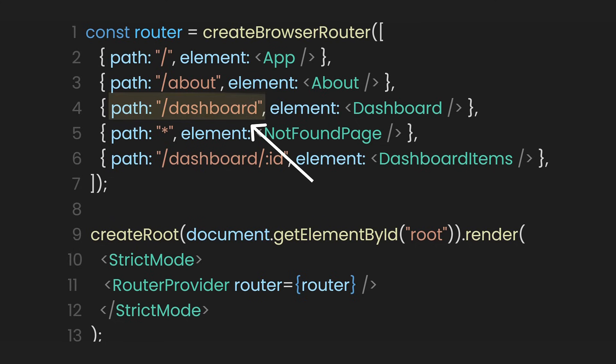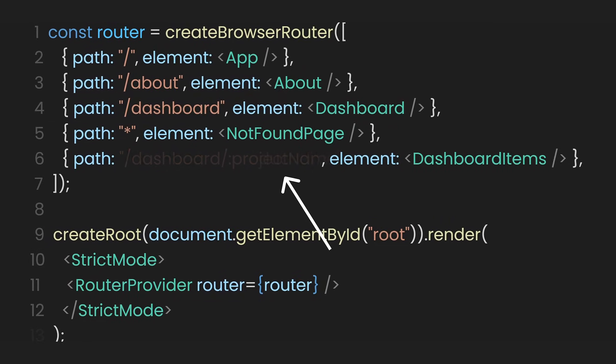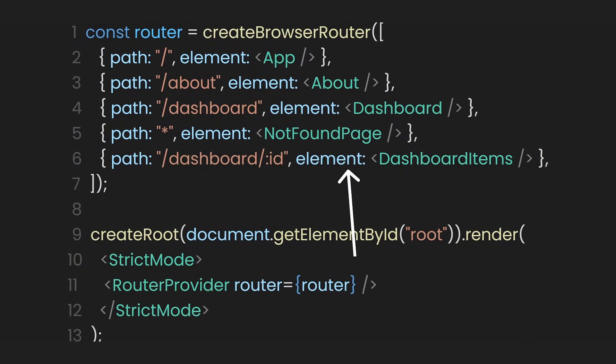Let's go to the main file and define a new route. You'll notice the colon before ID — this indicates that the route is now dynamic and can change or adapt based on input, context, or user interaction. As opposed to being fixed, you can name it anything you want, like ID, project name, or product ID. After defining the path, let's use the DashboardItems component to display this dynamic page.